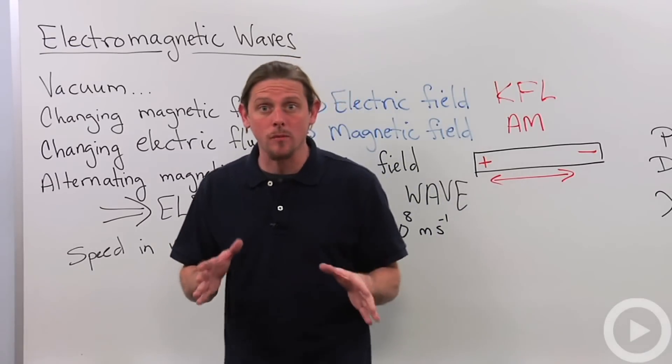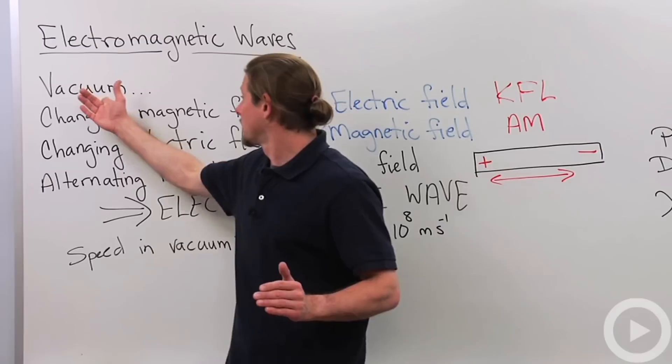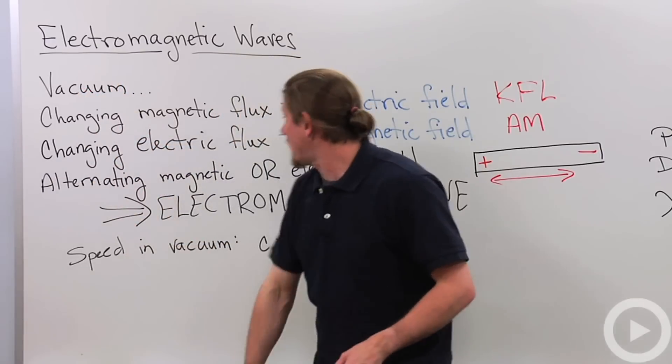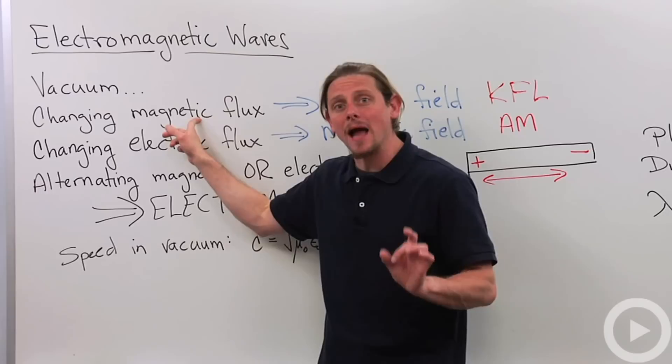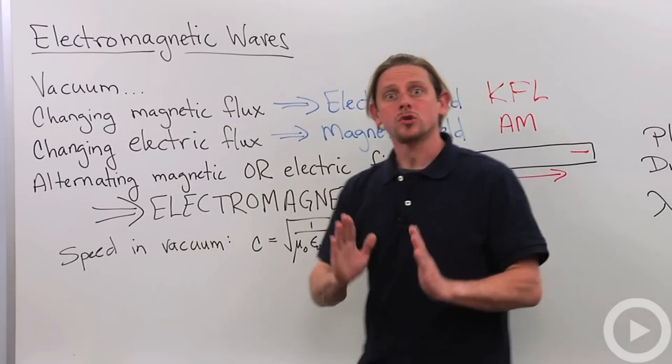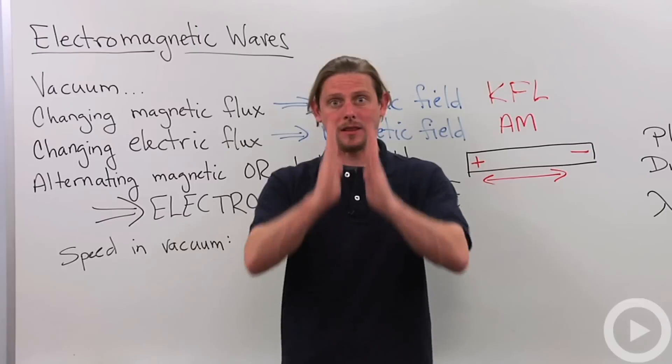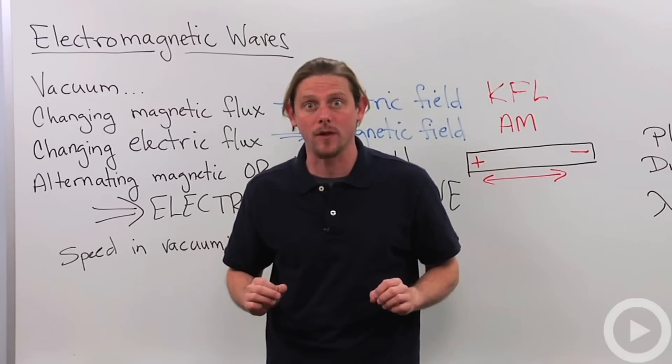When we look at electromagnetic fields in a vacuum we find that because of the Kirchhoff-Faraday-Lenz law if I change a magnetic flux I will generate an electric field. So if the magnetic flux is changing like this then the electric field will circulate around that changing magnetic flux.